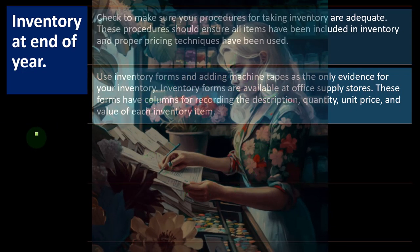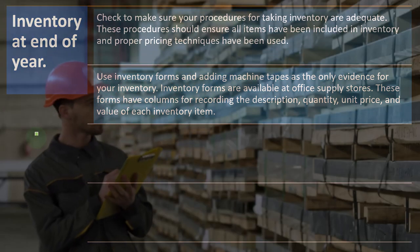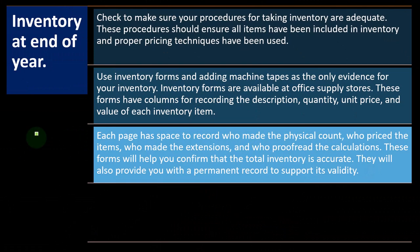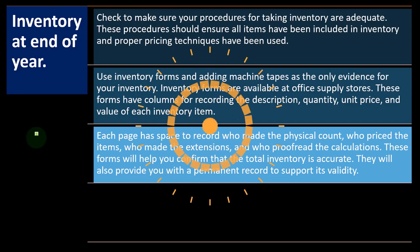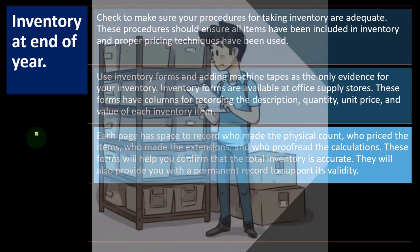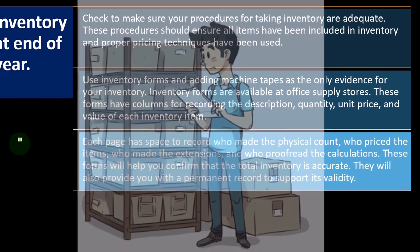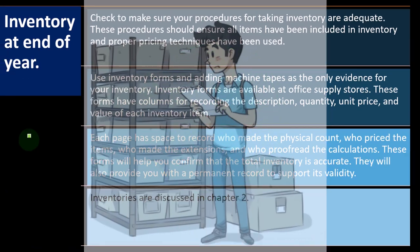Use inventory forms and adding machine tapes as evidence for your inventory. Inventory forms are available at office supply stores and have columns for recording description, quantity, unit price, and value of inventory items. You might use different tracking methods: first-in first-out (FIFO), last-in first-out (LIFO), weighted average, or specific identification. Each page has space to record who made the physical count, who priced the items, who made the extensions, and who proofread the calculations. These forms help confirm total inventory accuracy and provide a permanent record to support its validity. Inventories are discussed in chapter two.